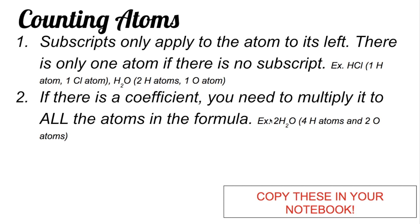This coefficient needs to be multiplied to all the atoms in the formula. So if you are going to count the number of atoms in two molecules of H2O, for hydrogen you have 2 multiplied by 2, which gives you 4 hydrogen atoms. And for oxygen, you have 2 multiplied by 1 — we say 1 since there is no subscript — so that's 2 oxygen atoms. That's rule number two.